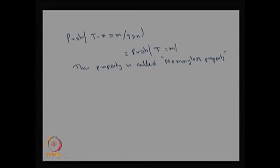Just as the binomial distribution arises from the Bernoulli process, one can also develop the Pascal distribution or negative binomial distribution. The random variable T was defined as the number of trials to get the first success or first arrival. If instead we define a random variable for the number of trials needed to get the rth success — where r ≥ 1 — this leads to the negative binomial distribution. When r = 1, this reduces to the same random variable T, the geometric distribution.